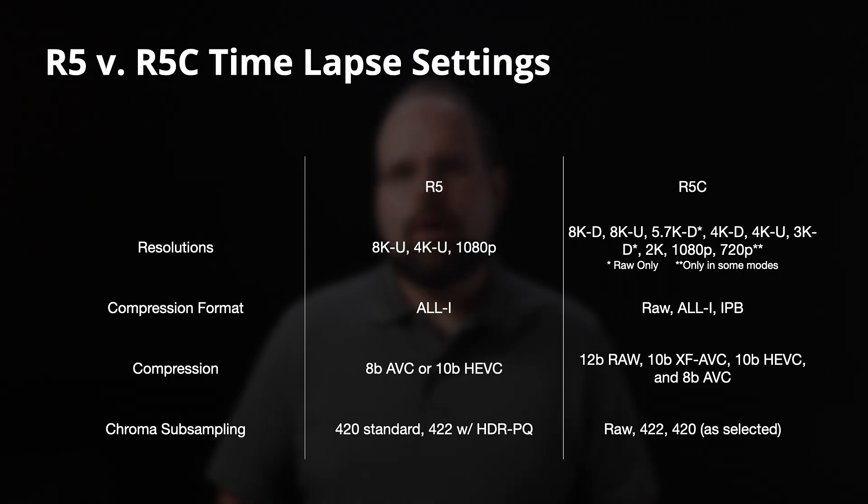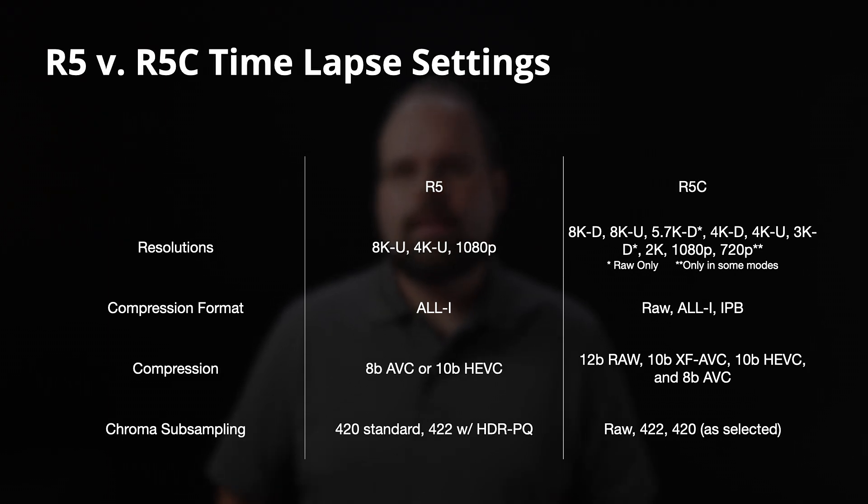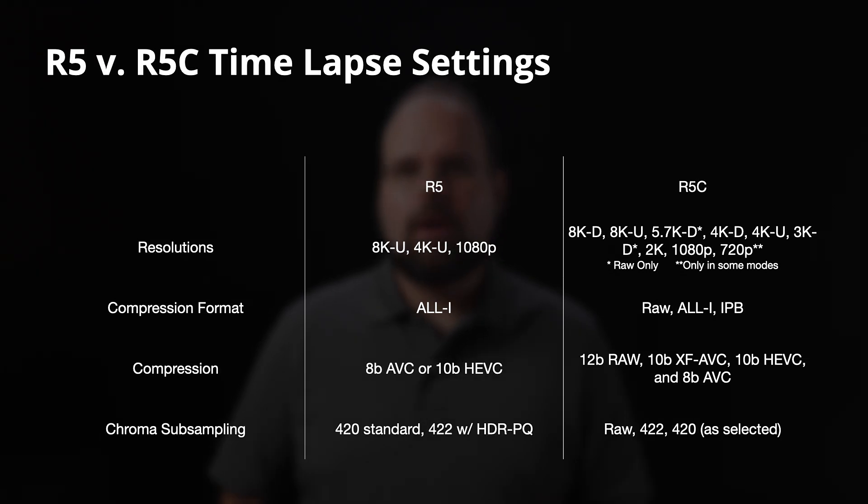The same is true for chroma subsampling. While the R5 can do both 4:2:2 and 4:2:0 chroma subsampling, what it does is tied to whether HDR PQ is enabled or not. On the R5C, the choice of chroma subsampling is handled the same way it is for every other video you shoot — you pick what you want when you set up your compression options. When shooting timelapses on the R5C, the camera really just behaves the same way it does when shooting normal content, at least when it comes to recording and image quality settings.